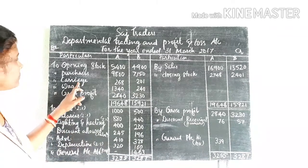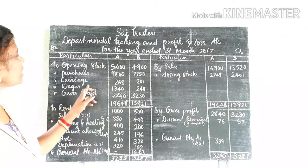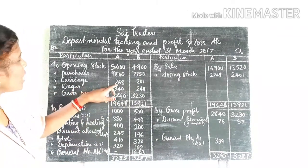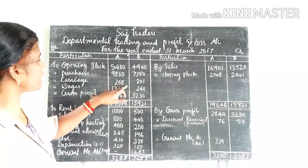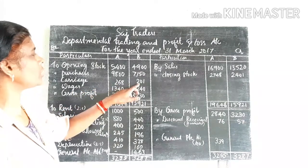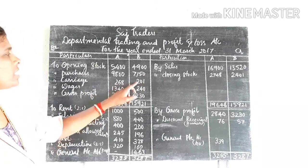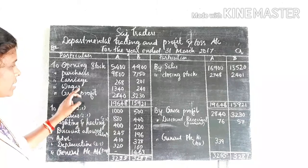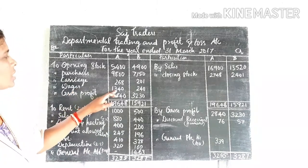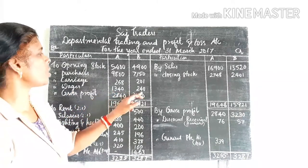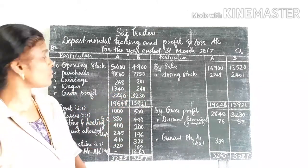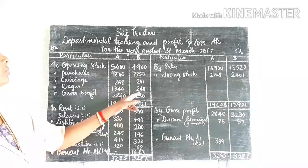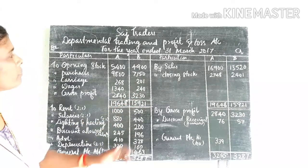Then carriage on purchases: Department A: 268 rupees, Department B: 201 rupees. Wages: Department A: 1,340 rupees, Department B: 240 rupees.